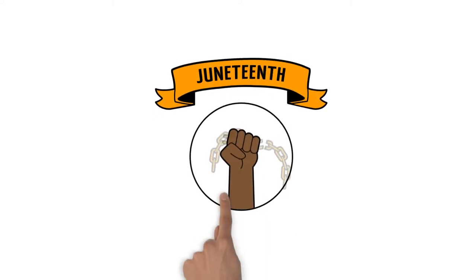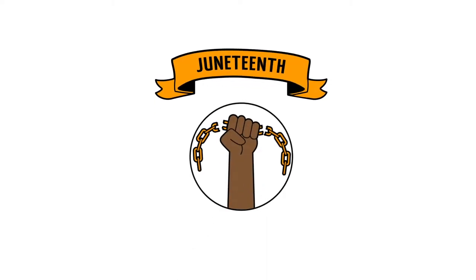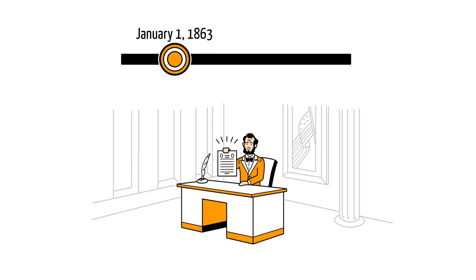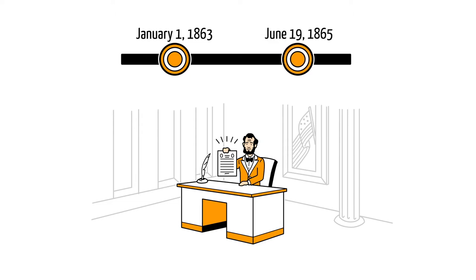We explain the history of Juneteenth. On January 1st, 1863, President Abraham Lincoln issued the Emancipation Proclamation, abolishing slavery. But it would take more than two and a half years for freedom to reach every state.